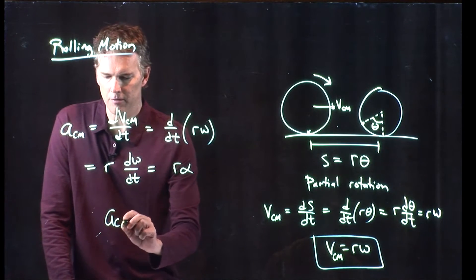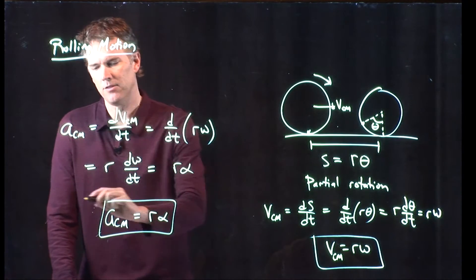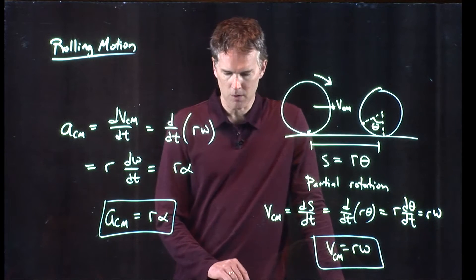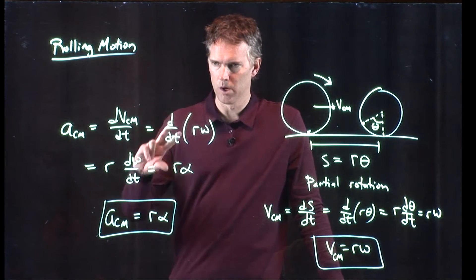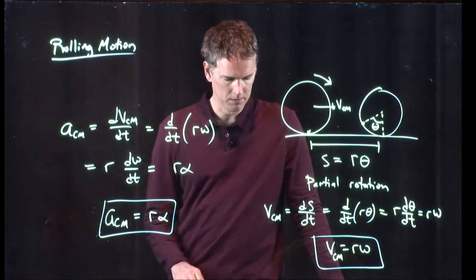And so the center of mass acceleration is equal to r times alpha. So all these things relate to each other through the radius of the object.